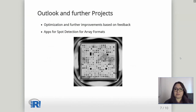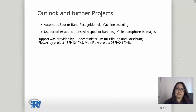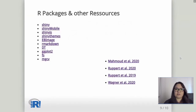The example of an array format — in this case a protein array — is shown on the slide. The next steps would include automatic spot or band detection, for example via machine learning, and the use of other applications with spots or bands, such as gel electrophoresis images. This project, and hopefully many more, were funded by the Bundesministerium für Bildung und Forschung. We also want to tell you about all the packages we used: Shiny and Shiny Mobile, Shiny Jays, Shiny Themes, EBI Image for image editing, R Markdown, DT, GGplot2, FS, and MGCV.